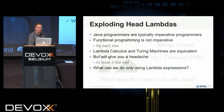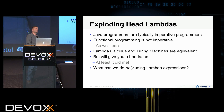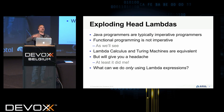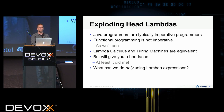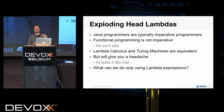I can do imperative code, procedural code, done lots of languages, and I have no problem with that. But functional programming takes a different kind of thought process, and Lambda Calculus is really the basis of that. What does it have to do with Java? What we're talking about here is exploding head Lambdas. Interestingly, Lambda Calculus and Turing machines are functionally equivalent — so anything you can do with a Turing machine, you can do with Lambda Calculus.